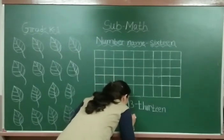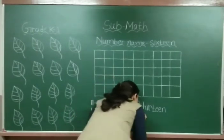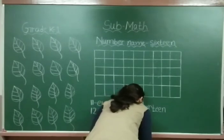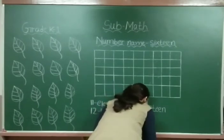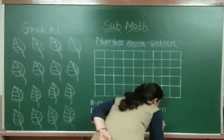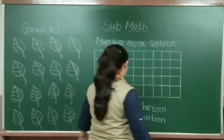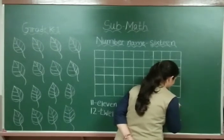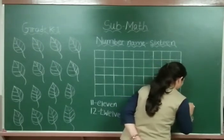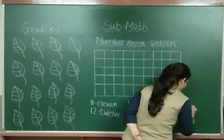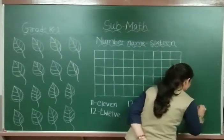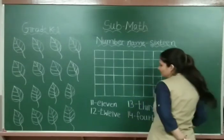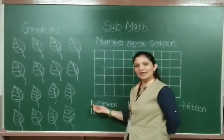Now 1, 4, 14. What is the spelling of 14? F-O-U-R-T-E-E-N, 14. Now 1, 5, 15. What is the spelling of 15? F-I-F-T-E-E-N, 15.